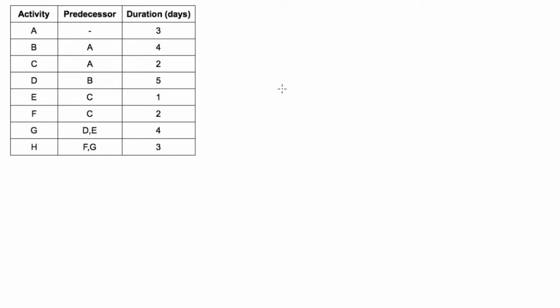Alright, welcome back everybody. In this video we are going to determine the project duration and critical path of a project that we are given the table of dependencies for. The process here: we'll do a rough draft to make sure we don't have any unnecessary crossovers.